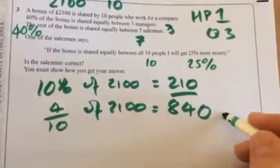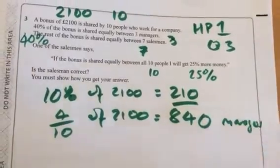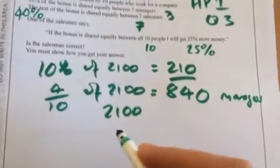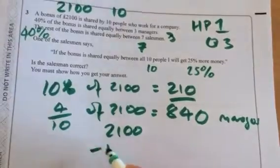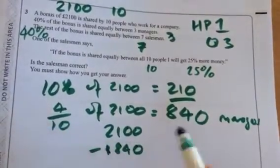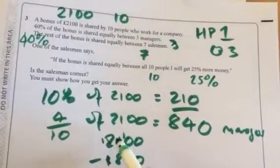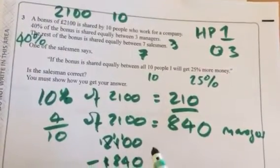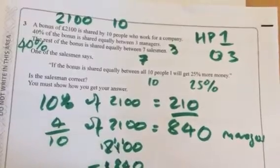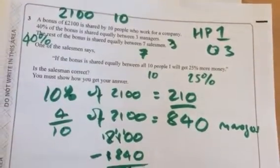840. Okay. And then 2,100 subtract 840 gives you 1,260. Subtract, sorry, 840 because that's for the takeaway of what the managers would get. More another one there. And that is the money shared equally between the seven salesmen. That would be a zero, so 1,260.